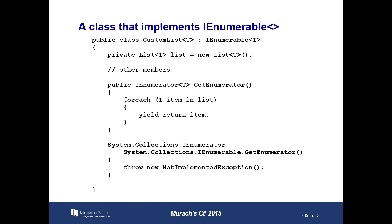Shown here is a class that implements the IEnumerable interface. Notice there's a forEach method in there, and that only works on generic collections that implement the IEnumerable interface. As a result, if you want to use forEach on a generic collection you've defined, you must implement the IEnumerable interface.